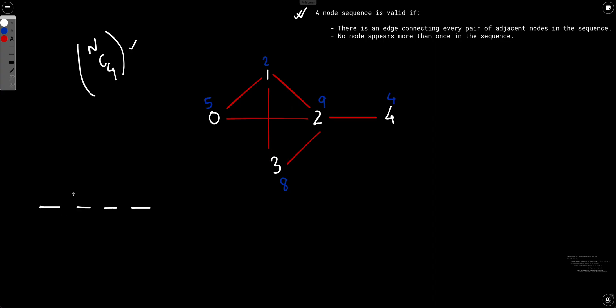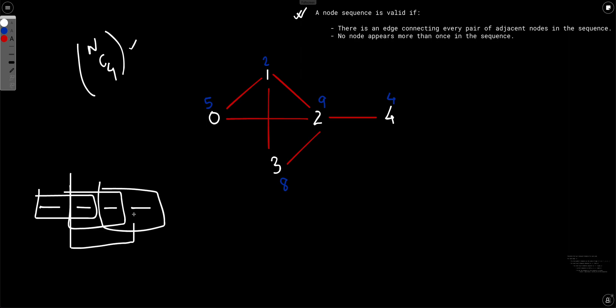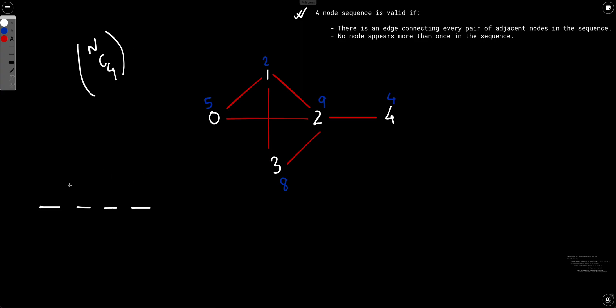We can fix the left position, the right position, or the middle positions. Why do we choose to fix the middle two? The answer is that choosing the middle two gives you the benefit that you can find the outer elements very easily — the left outer element is just a neighbor of the left middle node, and similarly for the right.